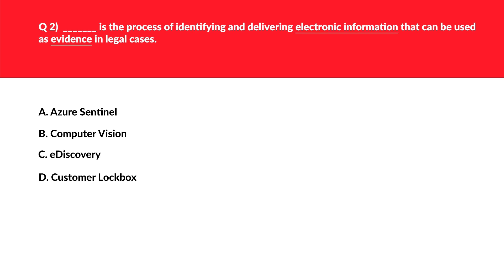This question is related to electronic information which can be used for evidence in legal cases. Let's look at option A, that is Azure Sentinel. Azure Sentinel is related to security analytics, which is AI-based. In the question there is no mention of AI or security, hence this seems to be an incorrect option.